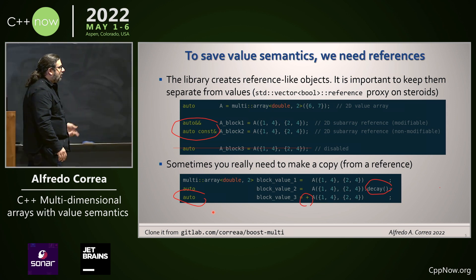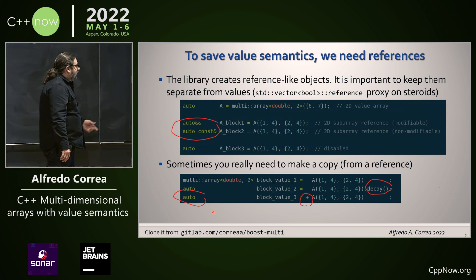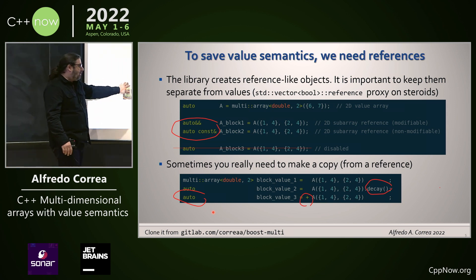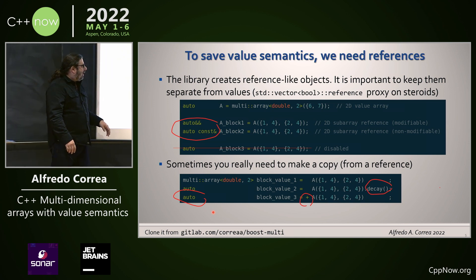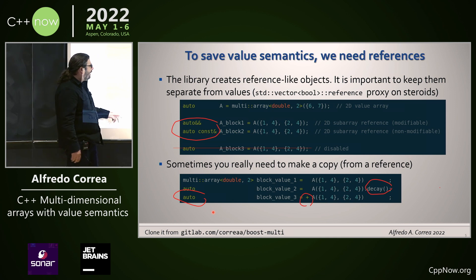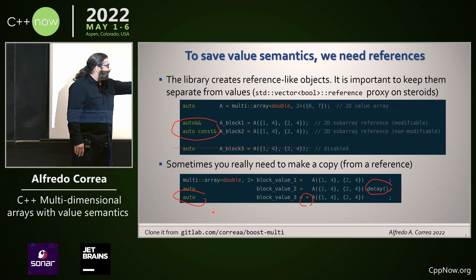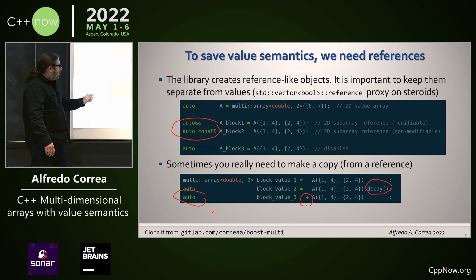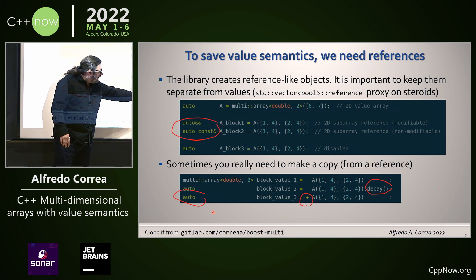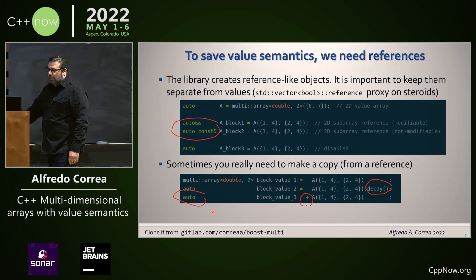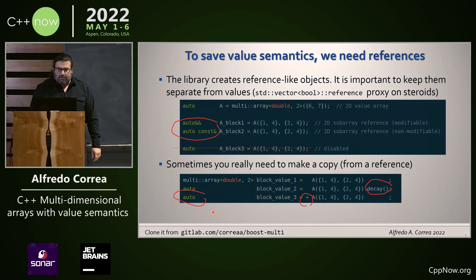Sometimes you really need to copy. In that case you assign a reference into something you know is a value type. If you use auto, you cannot — it's disabled in the library — so you have to do decay. And if you don't like the word decay, there is what I think is the universal decay operator, which is unary plus.